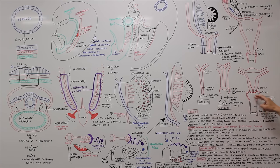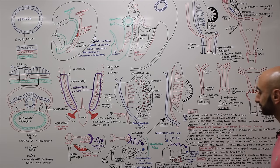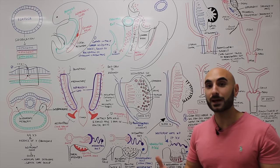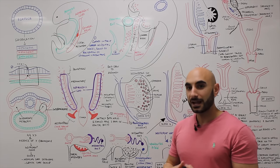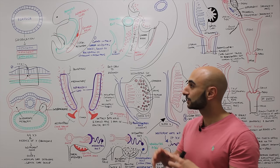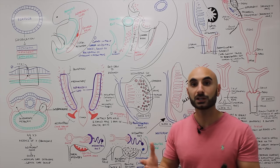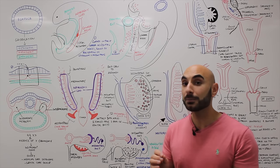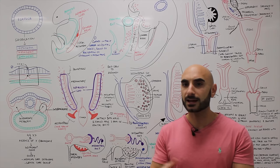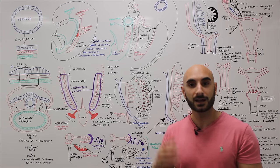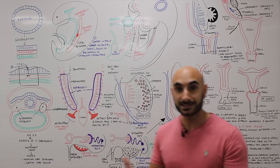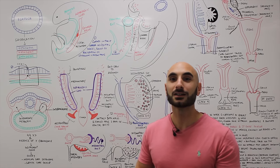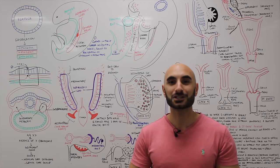At the top, the fornices are made from paramesonephric origin, and the bottom part is from urogenital sinus. The hymen is created from urogenital sinus and consists of epithelium of vaginal cells and urogenital sinus cells. The solid tip of the paramesonephric duct invades the urogenital sinus to form the sinovaginal bulb, which proliferates into a solid vaginal plate. By week 20 the vagina is completely canalized. The lumen of the vagina is separated from the urogenital sinus by the thin tissue called the hymen. The vagina is therefore derived from both the paramesonephric duct and the urogenital sinus. That is the development of the female reproductive system.